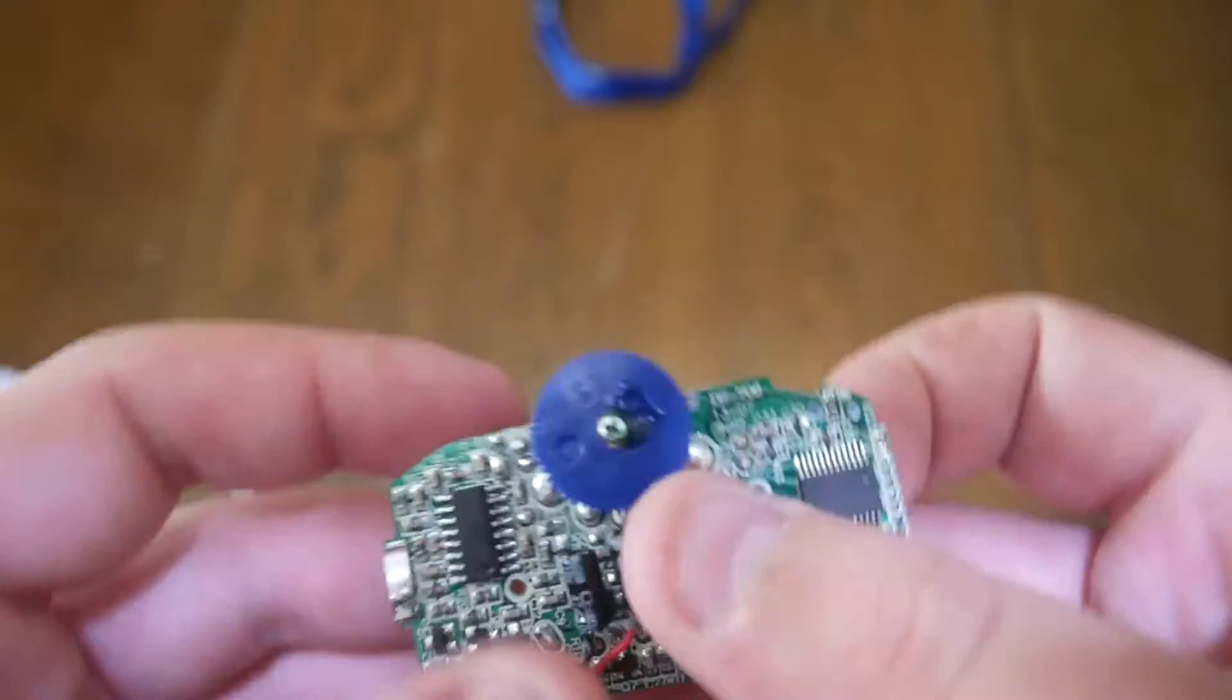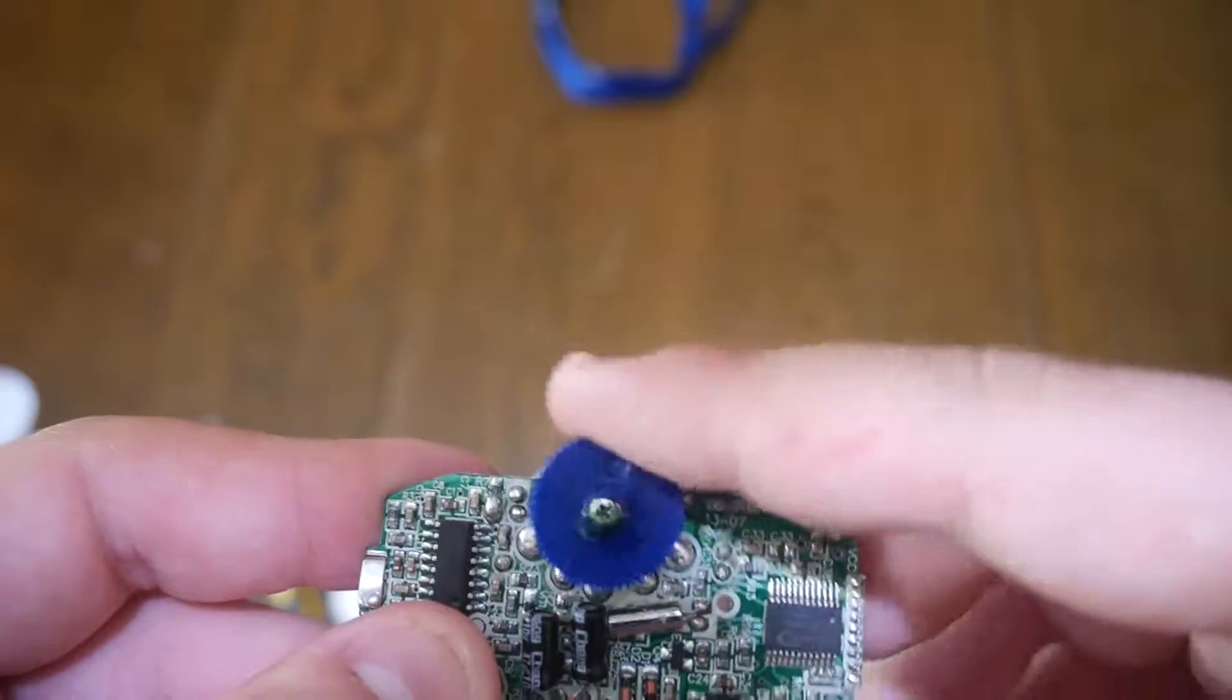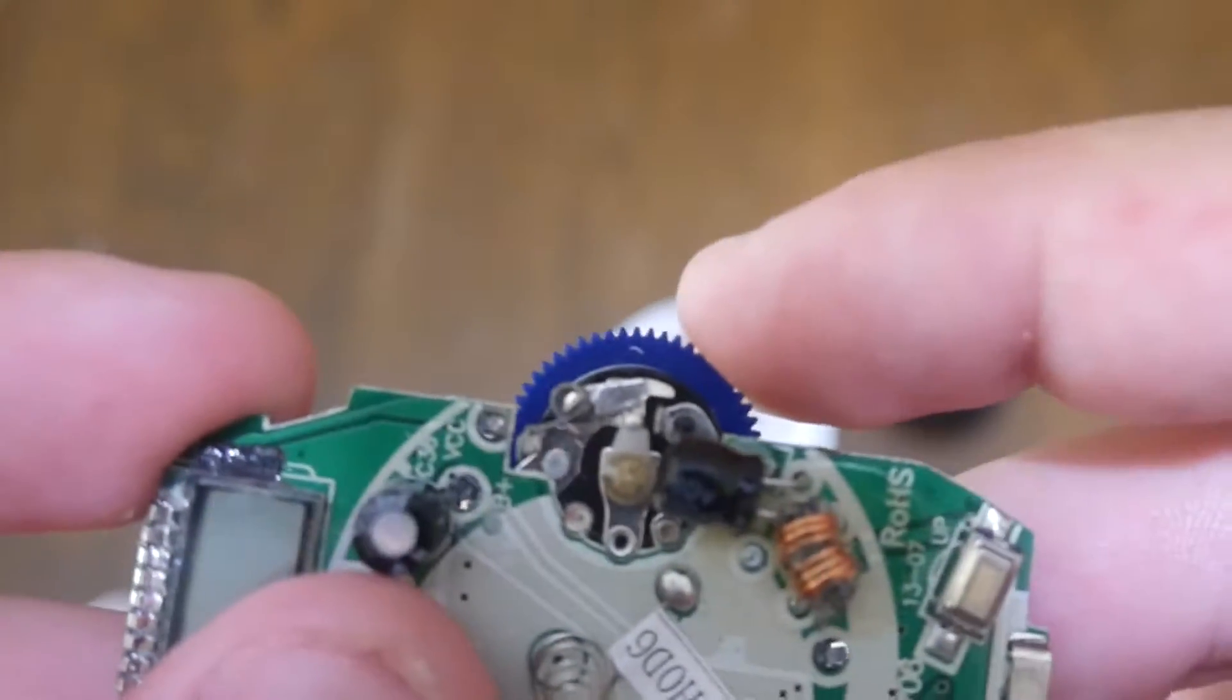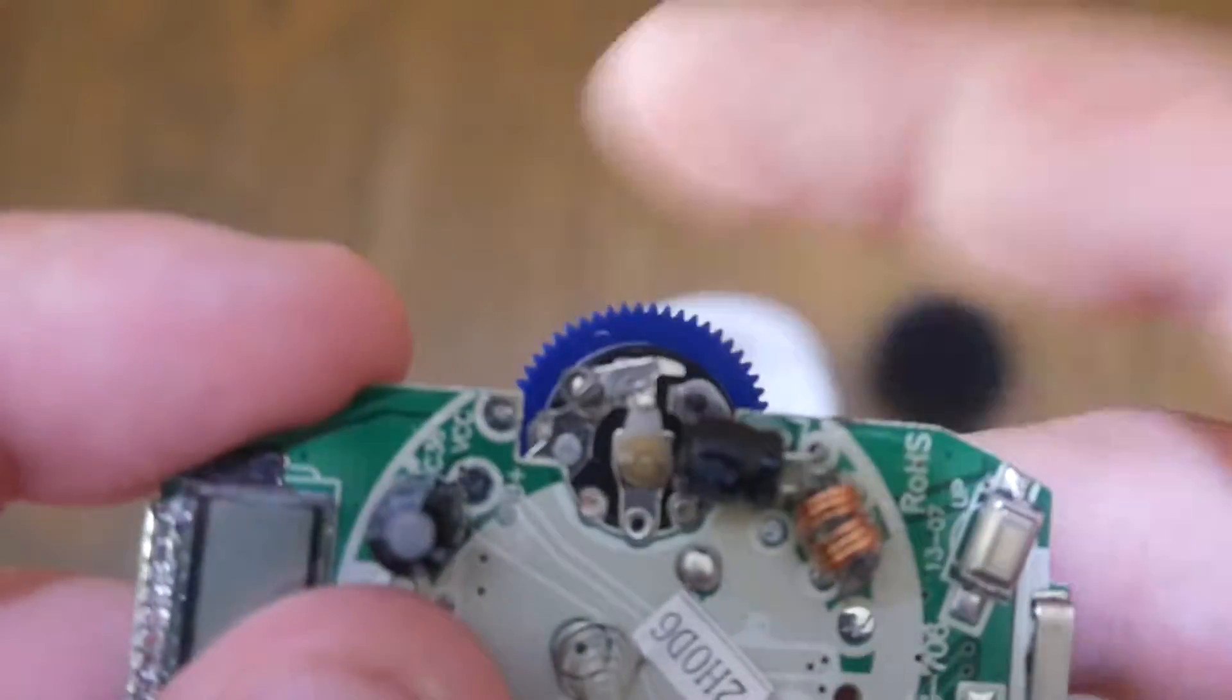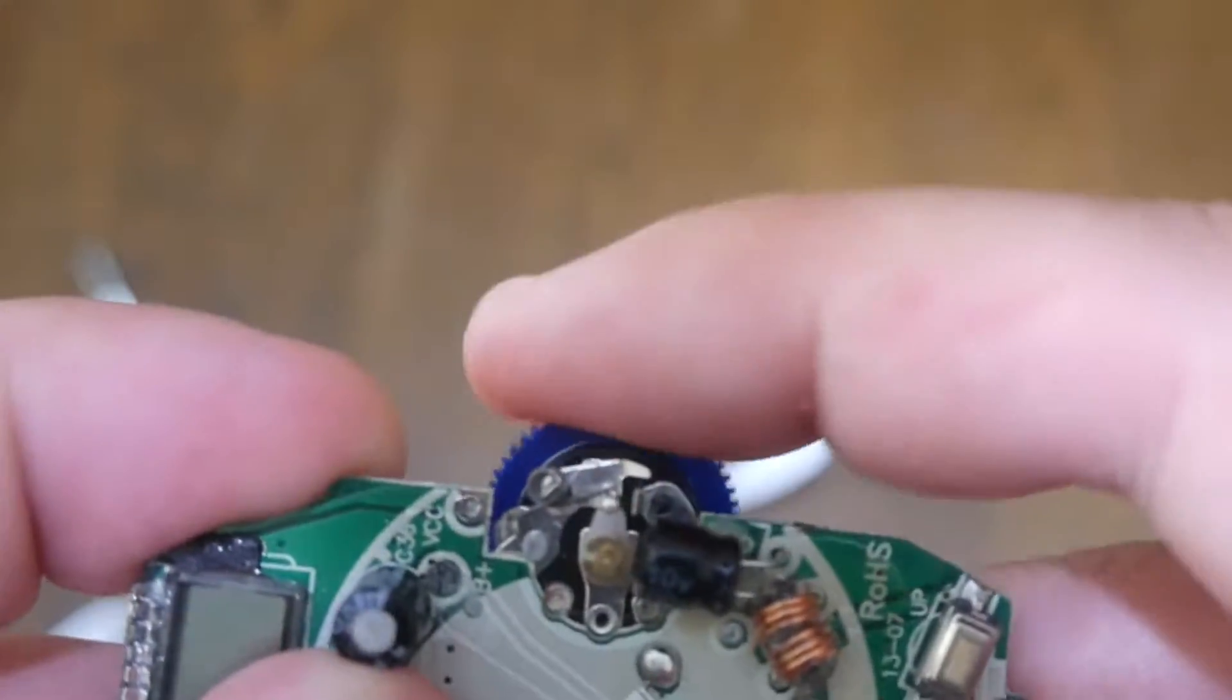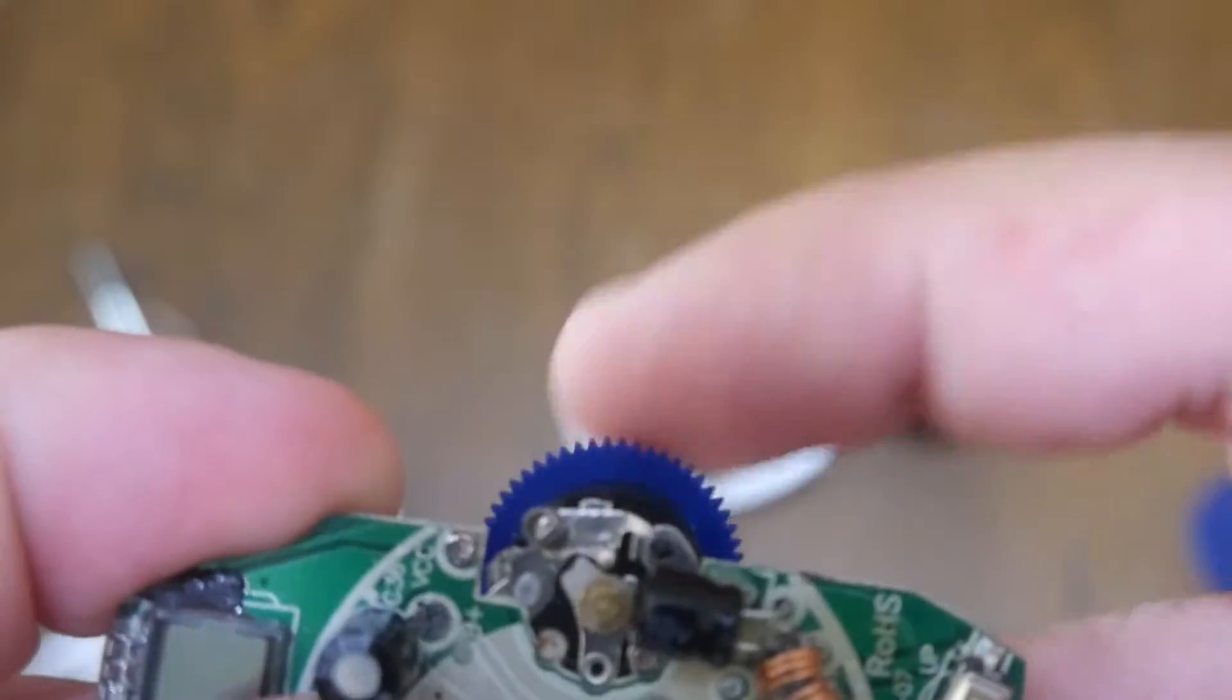Bringing it really close, you can see how a circuit is completed and broken by this. When you turn it on, it completes the circuit—this bit pushes down and closes the circuit. When you turn it off, it just lifts that up, and that's what causes the clicking noise.